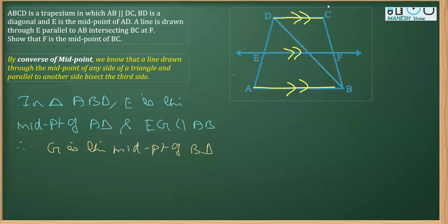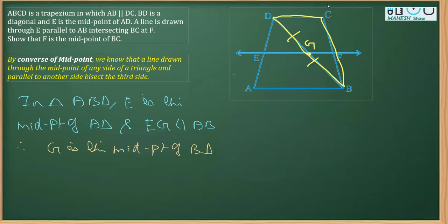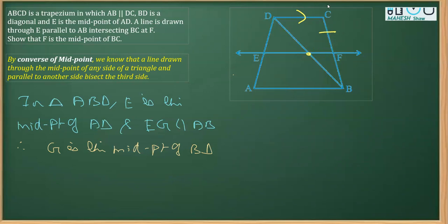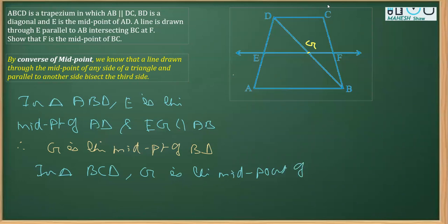So in triangle BCD, we have G as the midpoint of BD — which was proved above — and GF is parallel to DC.